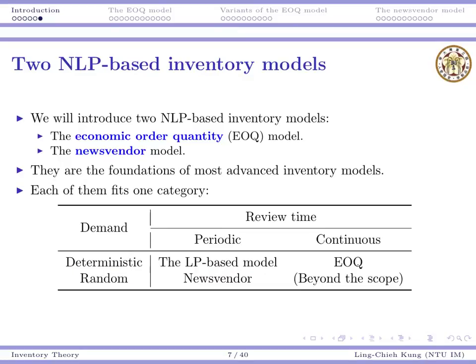We're going to see that the EOQ model is used to solve deterministic demand problems with continuous review, and the NewsVendor model is used to solve random demand problems with periodic review. There are also random demand problems with continuous review, but we don't have time to cover that in this course.